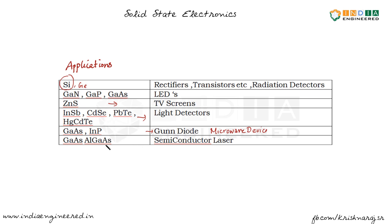Semiconductor lasers also use gallium arsenide and aluminium gallium arsenide. Three-element compounds give more flexibility — you can adjust the ratio of elements to fine-tune the semiconductor's properties for your requirement. To summarize: silicon goes into making rectifiers, and compounds like gallium nitride, gallium phosphide, and gallium arsenide go into making LEDs.